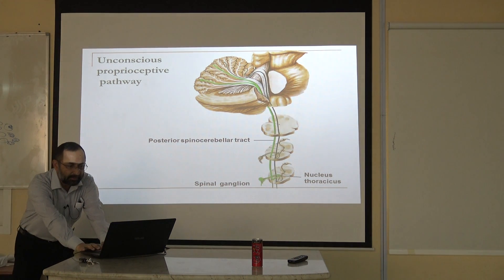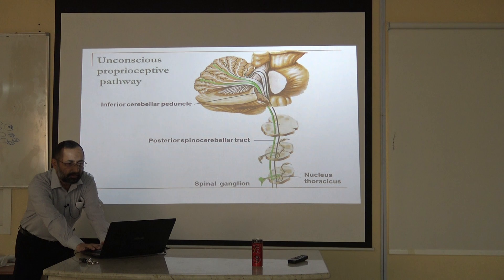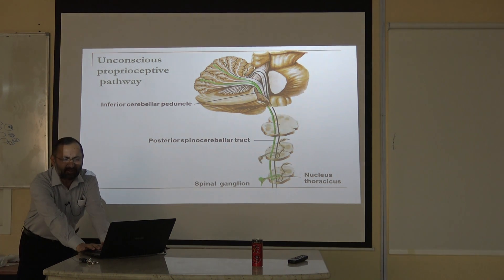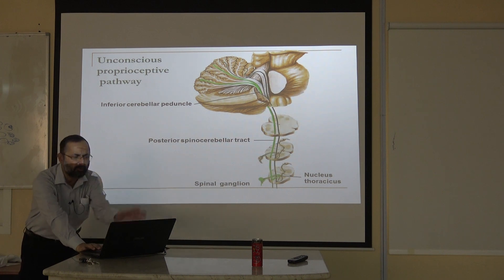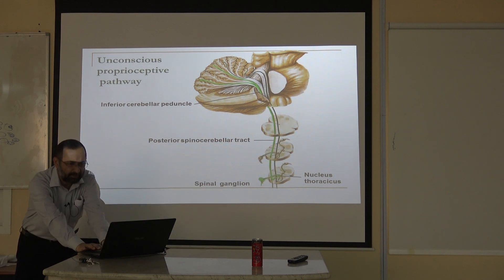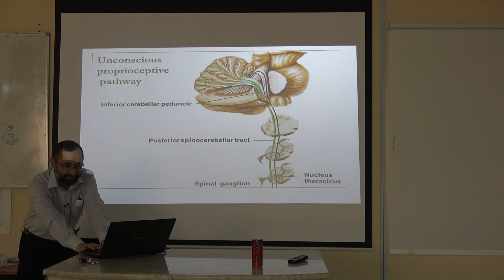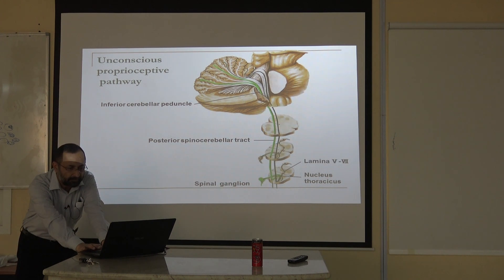Now look at the other one. It is passing through one area of your brain called the inferior cerebellar peduncle — you will study that in anatomy. The posterior tract passes like that, and now we are talking about the anterior tract.